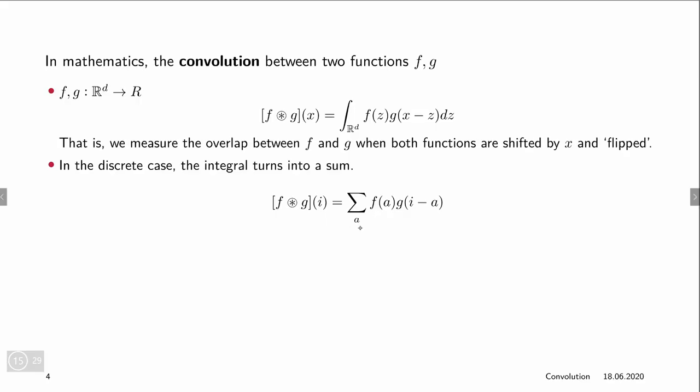Basically you can already forget about the continuous convolution because what we are interested in, in terms of these shifts, is really discrete. In the discrete case these integrals turn into a sum. So now the convolution of f and g at this index i equals the sum of f evaluated at a times g of i minus a.